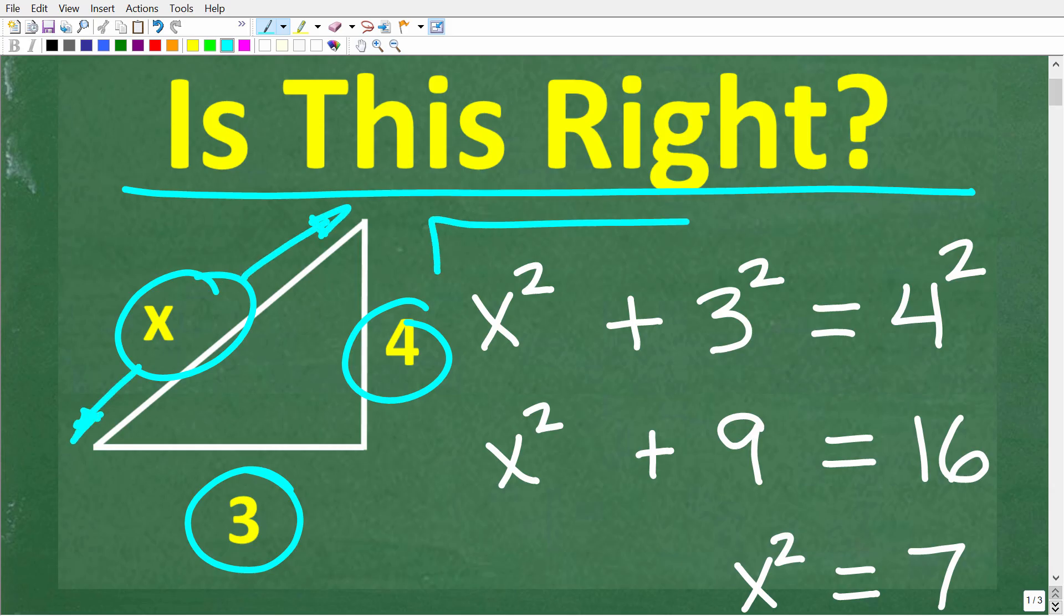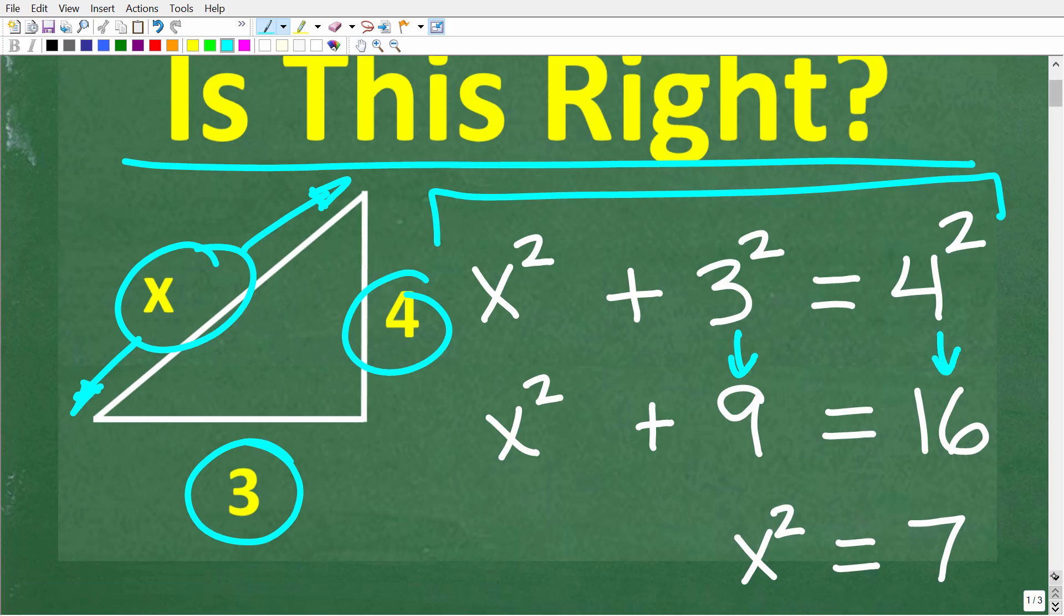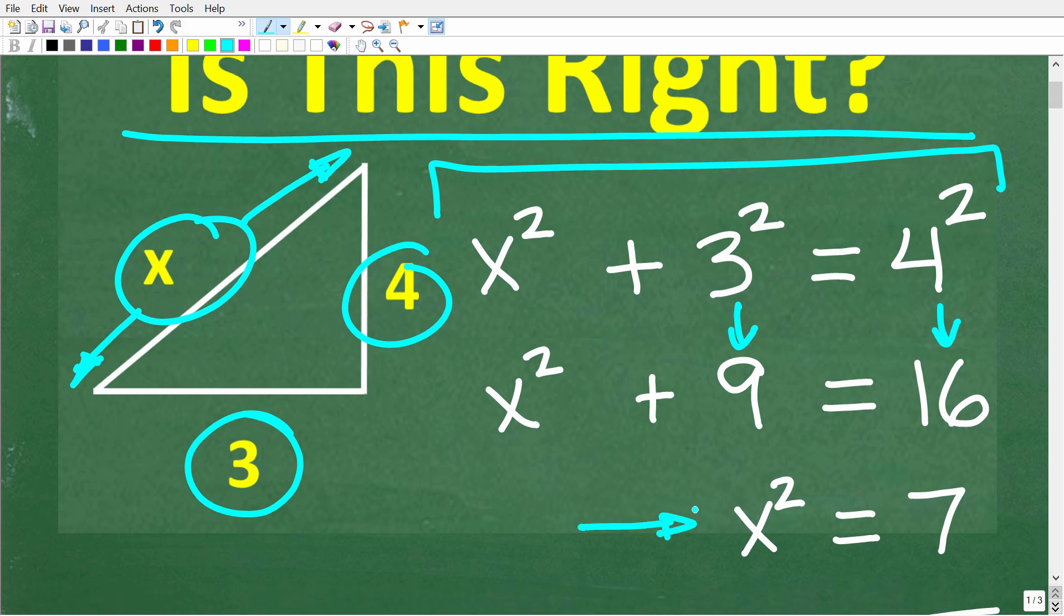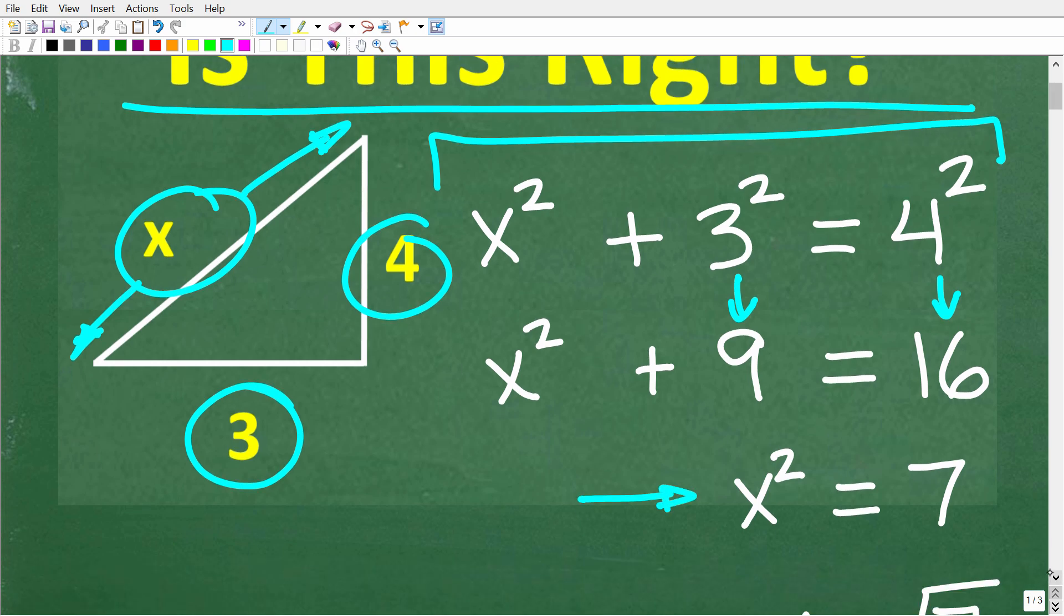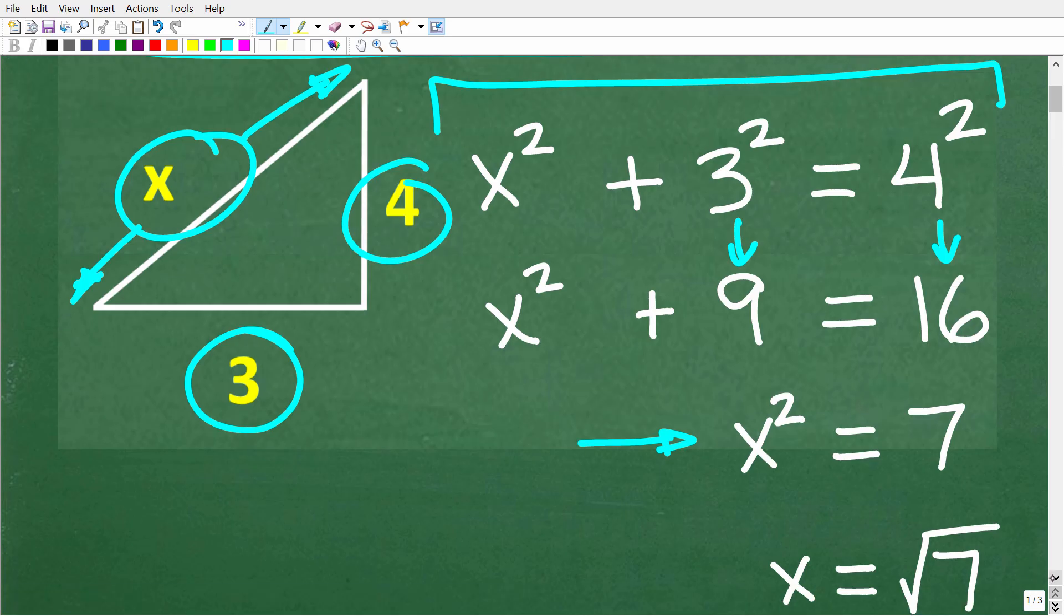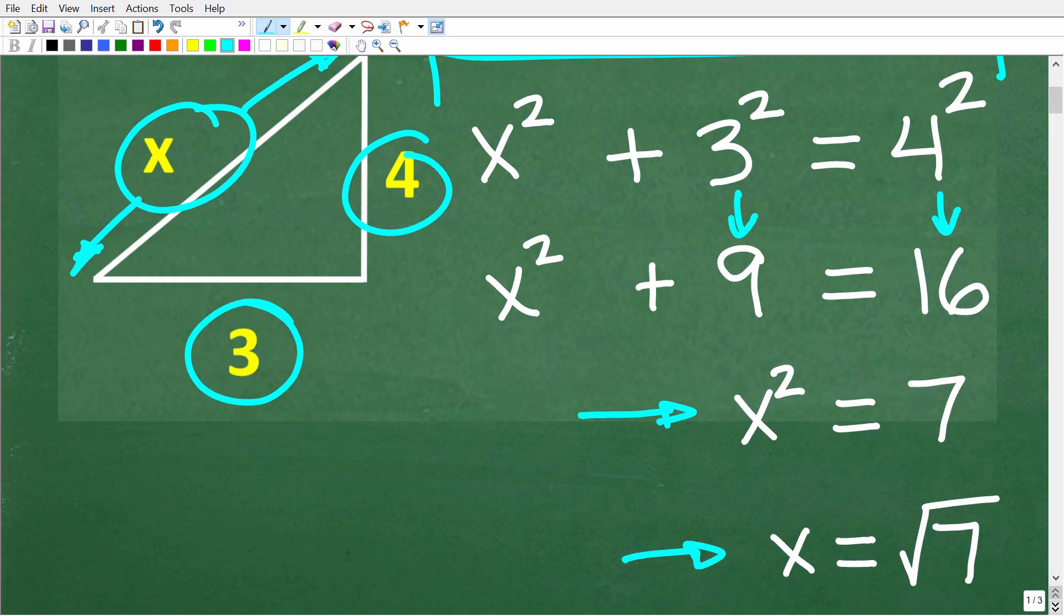So here is the solution. We have x squared plus 3 squared is equal to 4 squared. 3 squared is 9, 4 squared is 16. So to solve for x, we're going to subtract 9 from both sides of the equation. That gives us x squared is equal to 7. And then to find x, we're going to take the square root of both sides. So x is equal to the square root of 7.